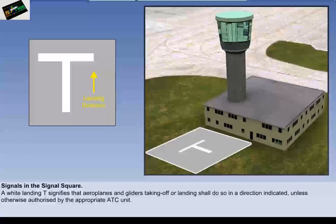The first signal in the signal square is a white landing T. This signal signifies that aeroplanes and gliders taking off or landing shall do so in a direction parallel with the shaft of the T and towards the cross arm, unless otherwise authorized by the appropriate ATC unit. The yellow arrow shown is just to help you visualize the direction of landing, and it is not part of the signal.